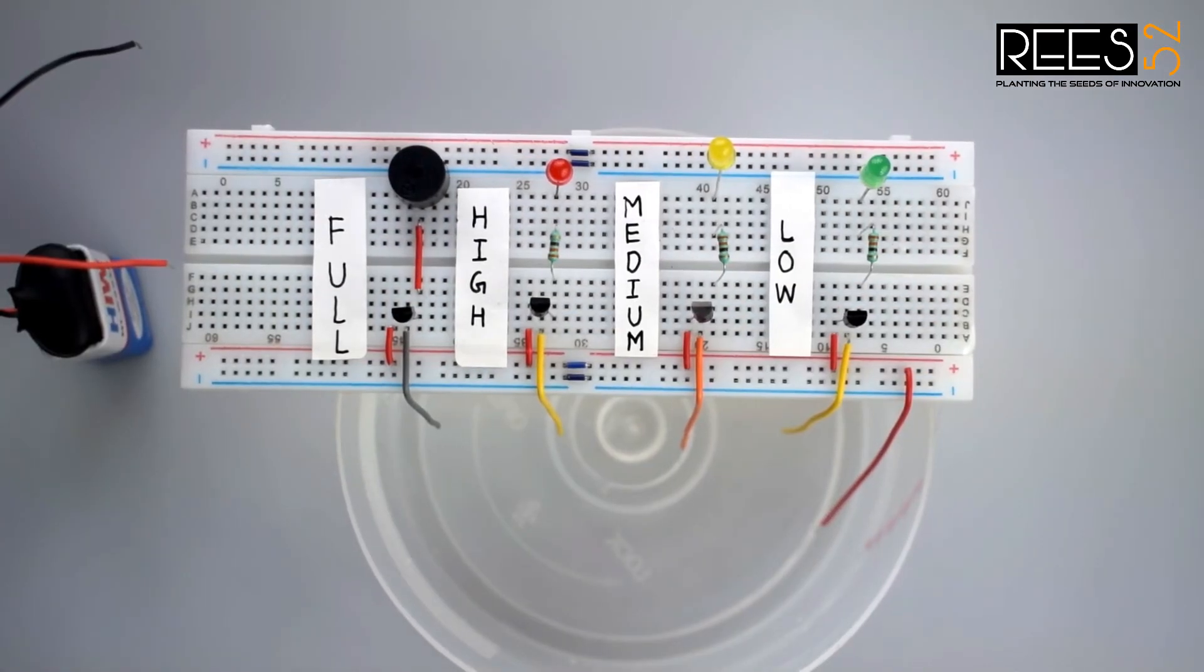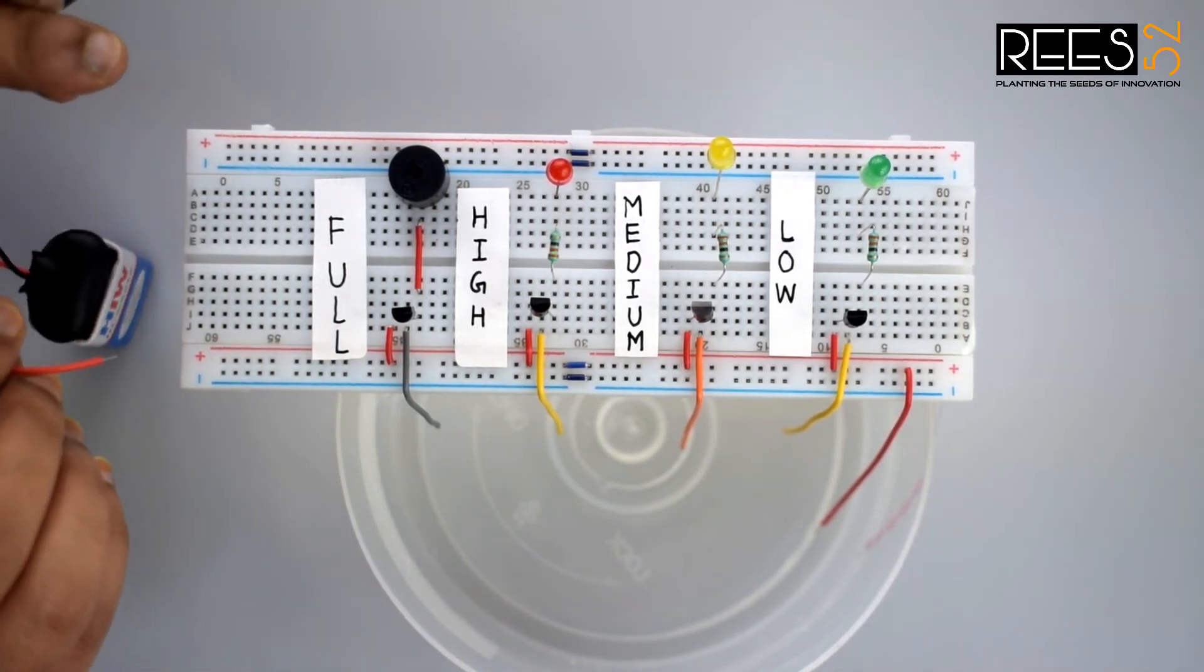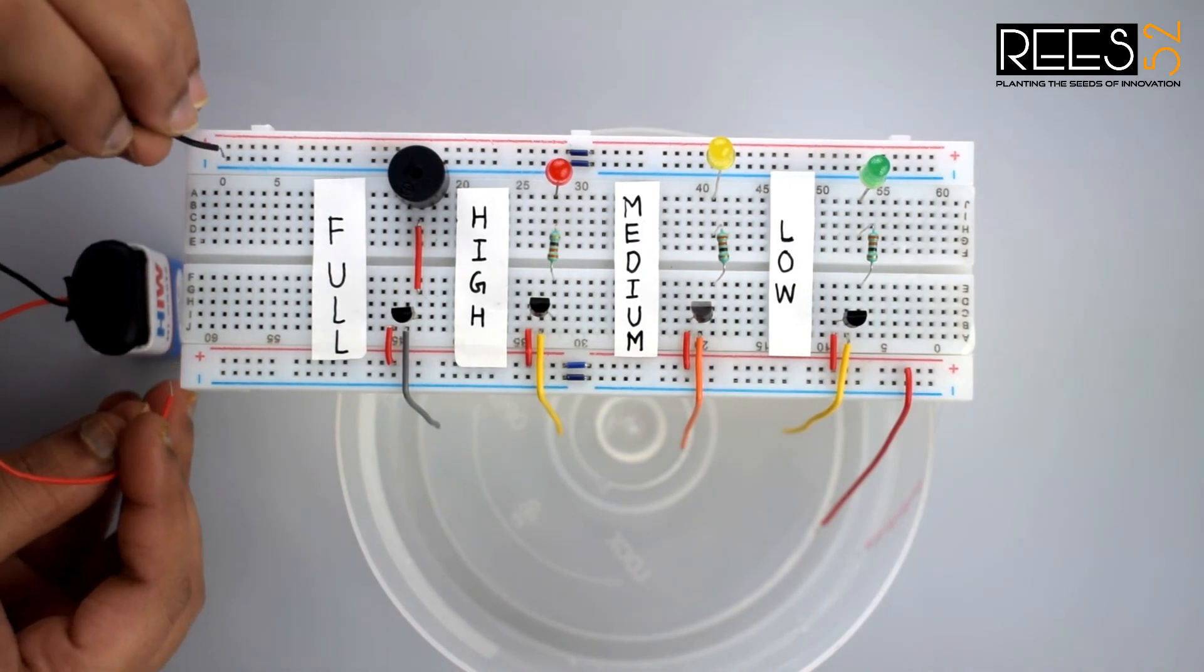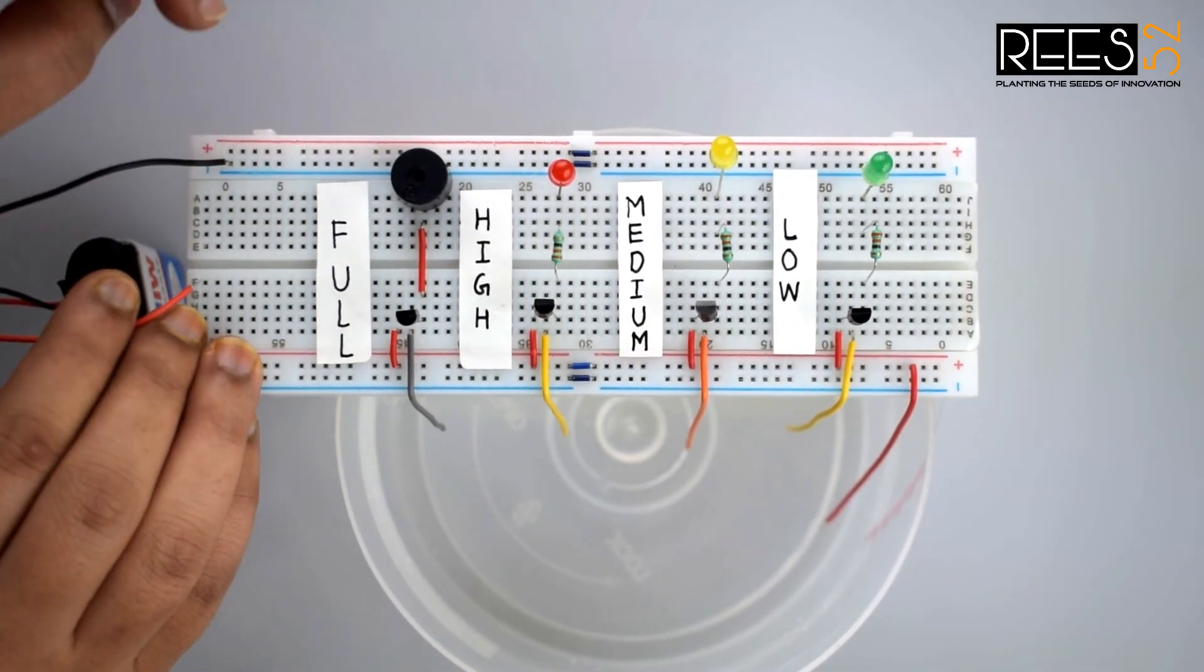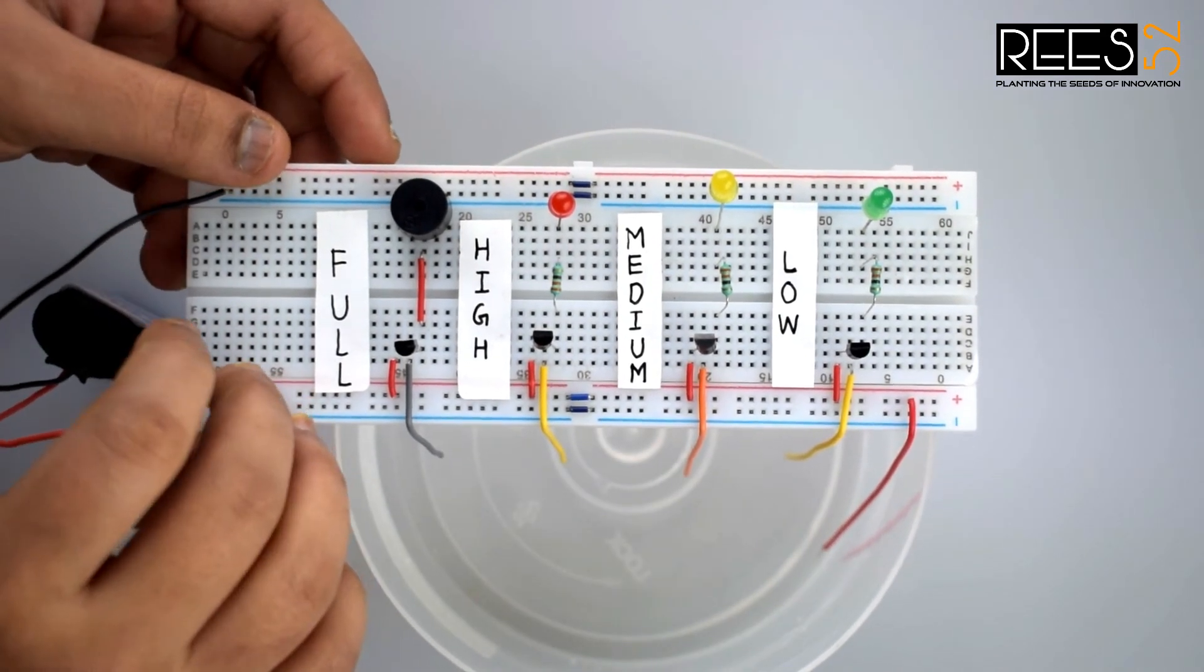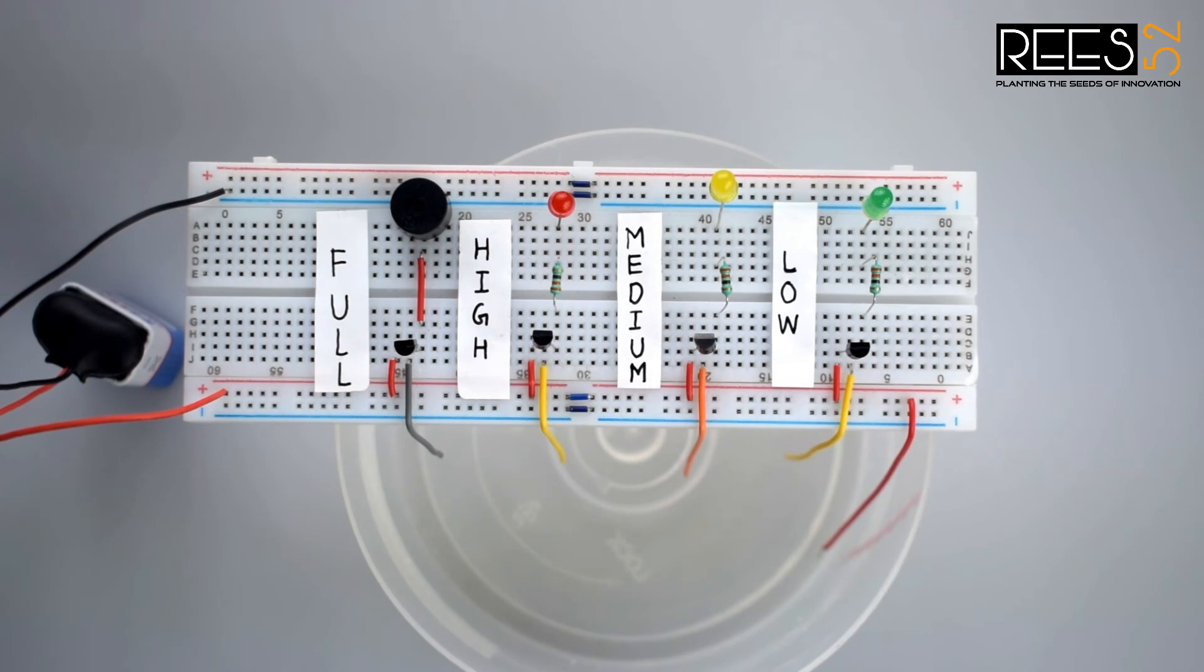Let's do it in action. Before filling the tank just connect the negative terminal of the battery to the negative rail of the breadboard, the positive terminal of battery to the positive rail of the breadboard. Now start filling the water. When the water level reaches to the point A, the circuit with green LED and the transistor Q1 gets completed and the green LED glows. Similarly,